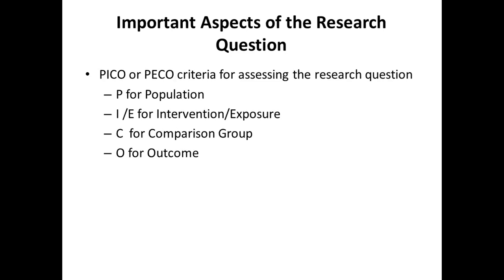The PICO criteria is a very important objective criteria to understand and assess the contents of the stem of the research question. PICO is an acronym, and there are two types: PICO and PECO. P stands for Population, I or E stands for Intervention or Exposure, C stands for Comparison group, and O stands for Outcome. We will give a considerable amount of time explaining this criteria with specific examples.